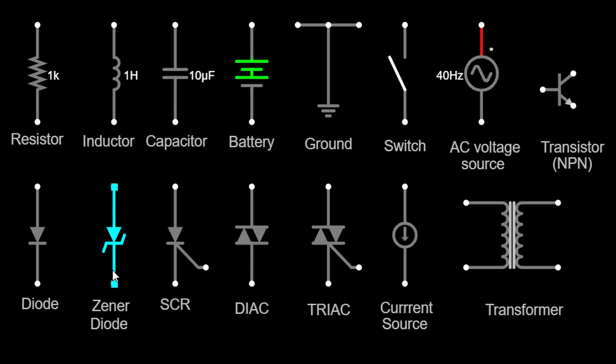Zener diodes maintain constant voltage even when the current changes. They are commonly used for voltage regulation and protection against voltage spikes.